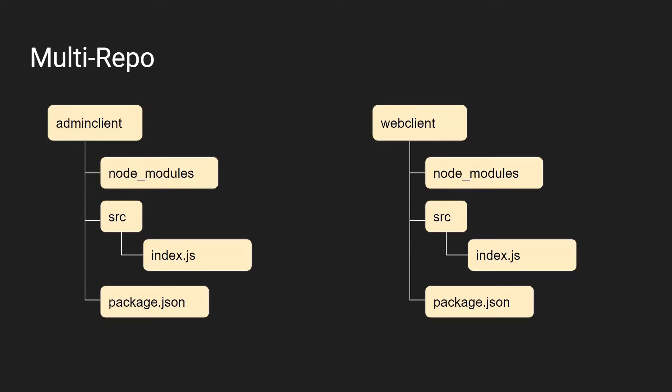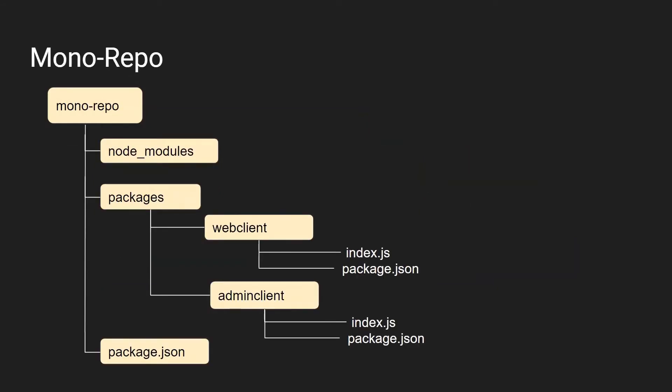In a monorepo, you have a single node_modules and one root package.json that lists all your workspaces or packages. You have a packages folder containing your actual JavaScript packages. Each package like web client or admin client has its own package.json and source folder. All dependencies in node_modules are shared, so you avoid multiple node_modules installations. Code from the web client can also be shared with the admin client — avoiding repetition of dependencies.